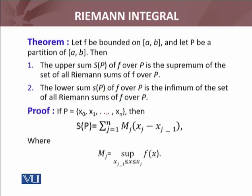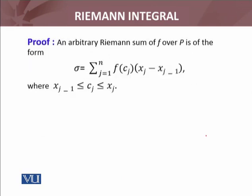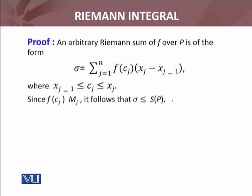I am going to prove this for the supremum; you will try the infimum case yourself. Let P be the partition, then S(P) equals this by definition — remember that M_j is the supremum of f over the subinterval [x_{j-1}, x_j], that is M_j = sup{ f(c_j) : x_{j-1} ≤ x ≤ x_j }. Any arbitrary Riemann sum over P uses sample points c_j. Since M_j is the supremum over the interval, we have f(c_j) ≤ M_j.